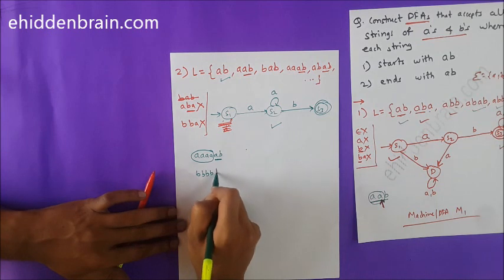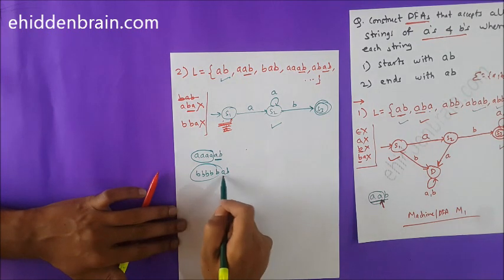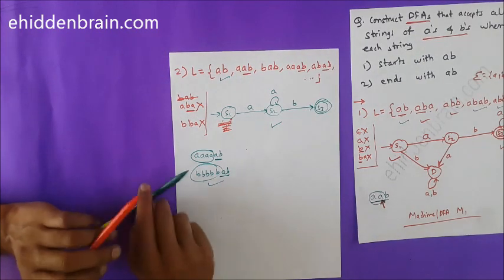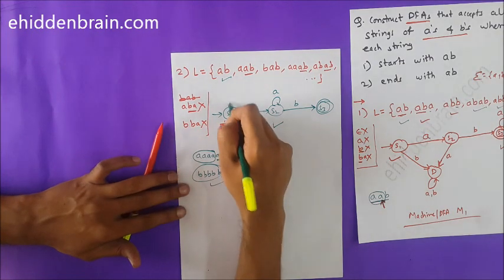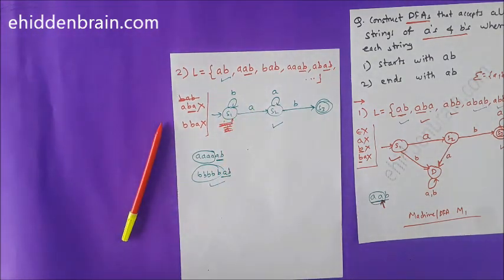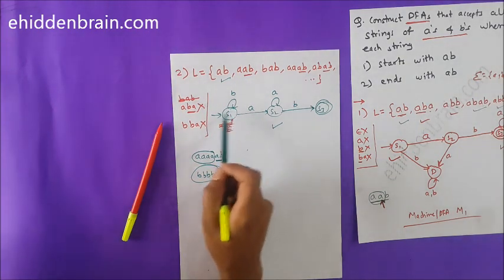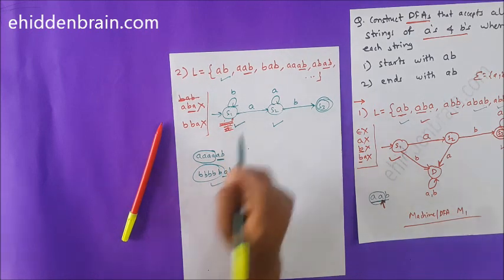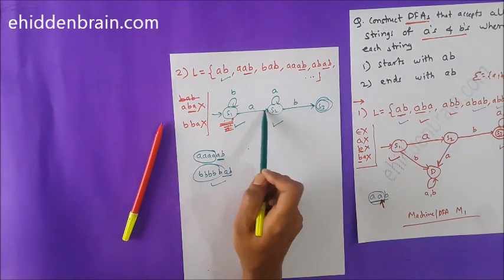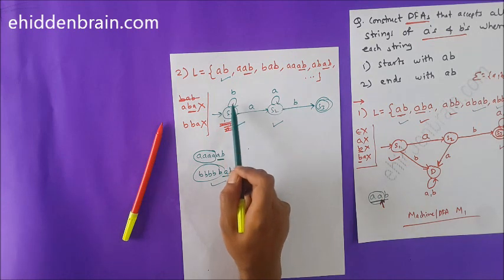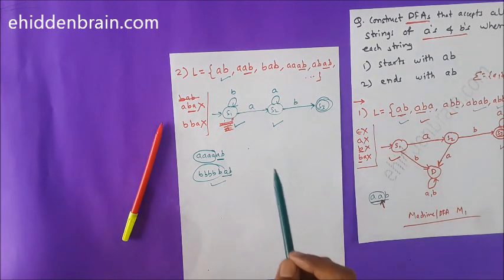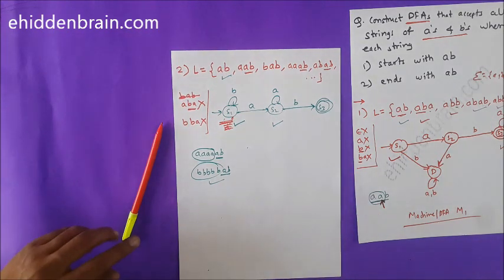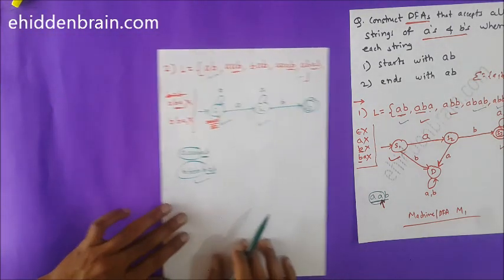For strings like BBBAB — any number of B's followed by AB — I need a loop of B somewhere. I can put a loop of B on S1, because that still gives a valid DFA. Now S1 has both A and B transitions, and S2 has both A and B transitions. These two states are complete DFA states. What about S3 — is it in DFA? S3 is not yet complete.